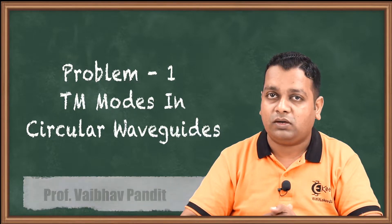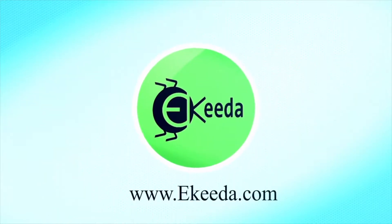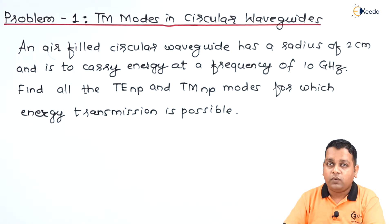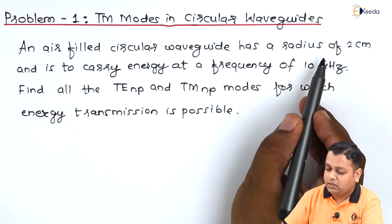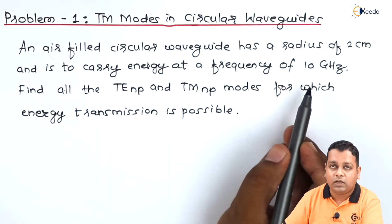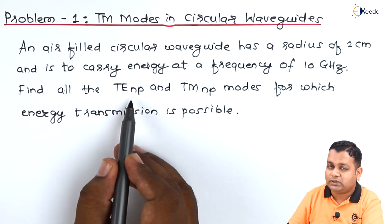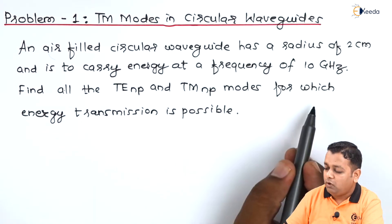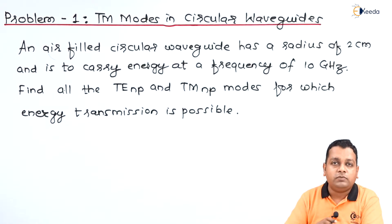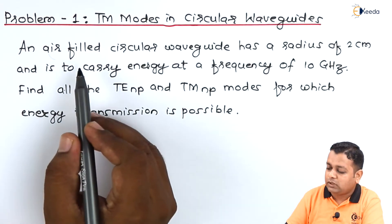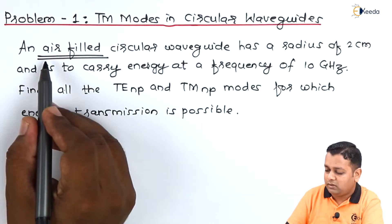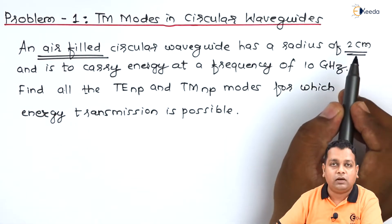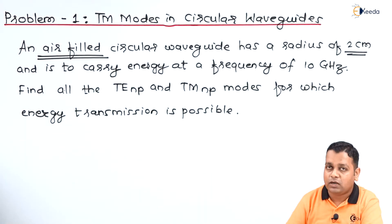So let us solve a first problem based on it. Here we are provided with the problem statement. Problem number 1: An air-filled circular waveguide has a radius of 2 cm and is to carry energy at a frequency of 10 GHz. The dielectric filling the cavity inside the waveguide is air, and the inner radius is 2 cm.